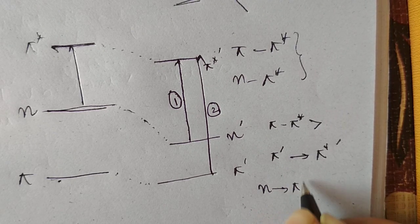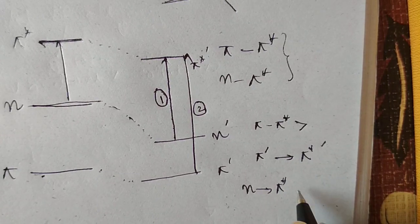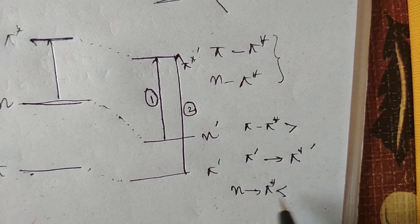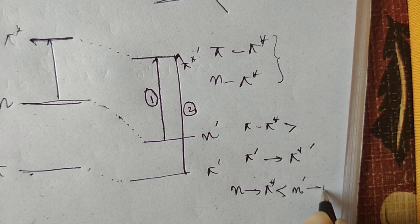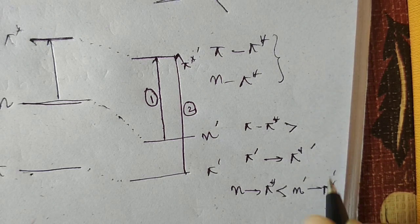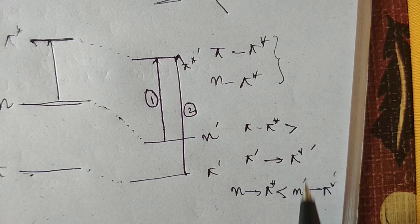And n to pi star is less than n prime to pi star prime. The prime notation indicates the polar solvent case.